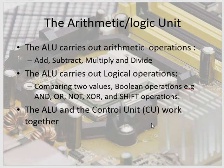The ALU — the arithmetic logic unit — carries out arithmetic operations such as add, subtract, multiply, and divide. It also carries out logical or boolean operations: comparing two values, AND, OR, NOT, exclusive OR, and shift operations. The ALU and the control unit work together to ensure that processing is done on time, all synced up, and any interrupts are catered for.